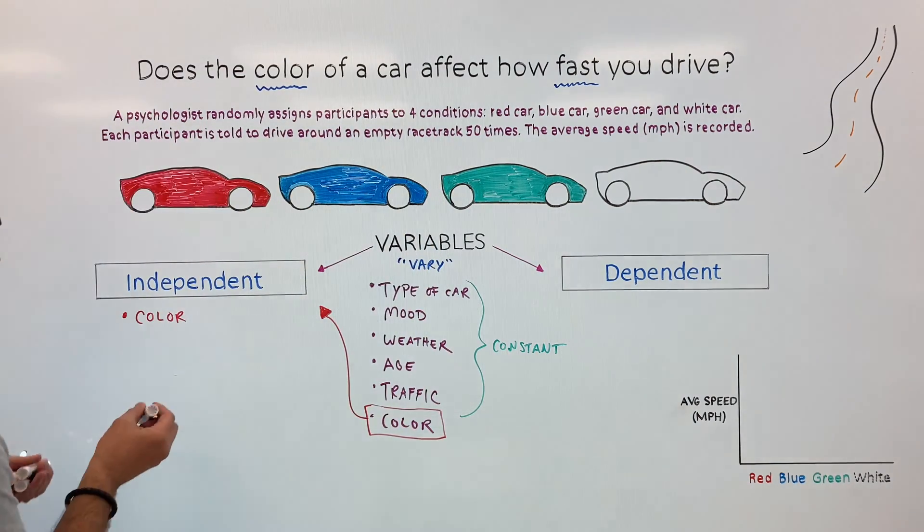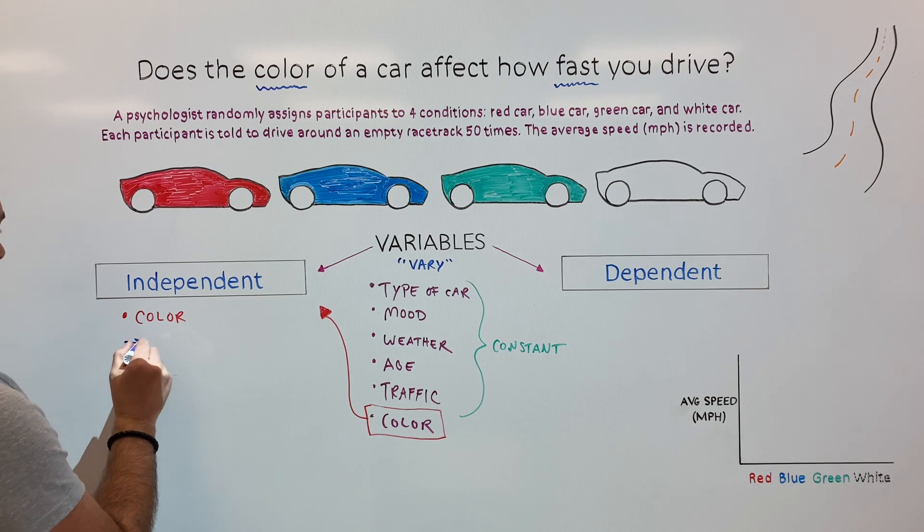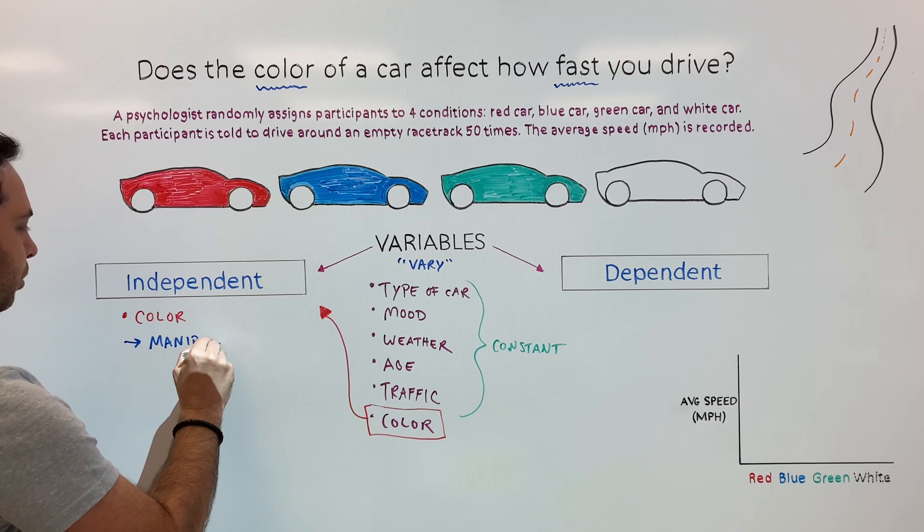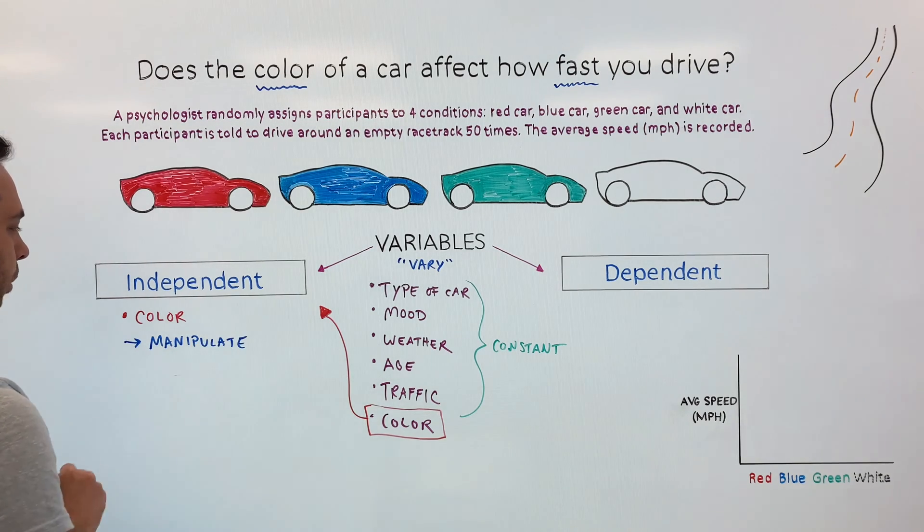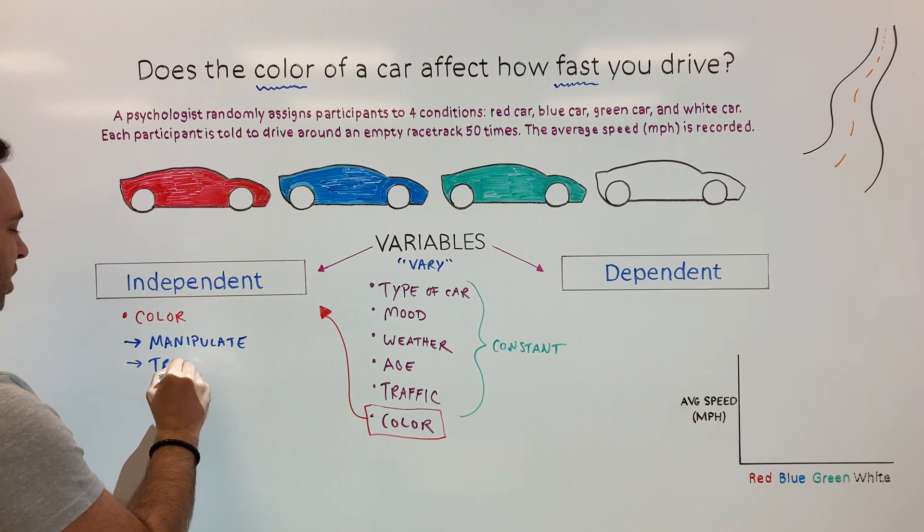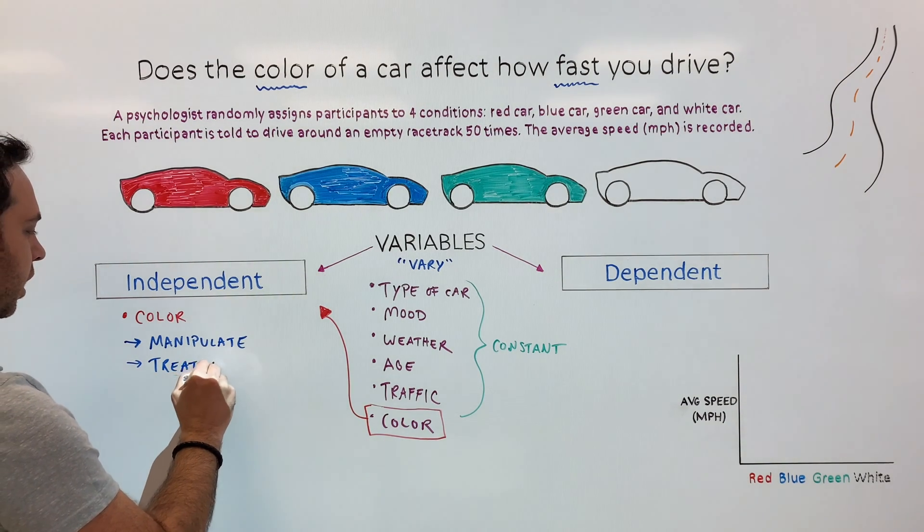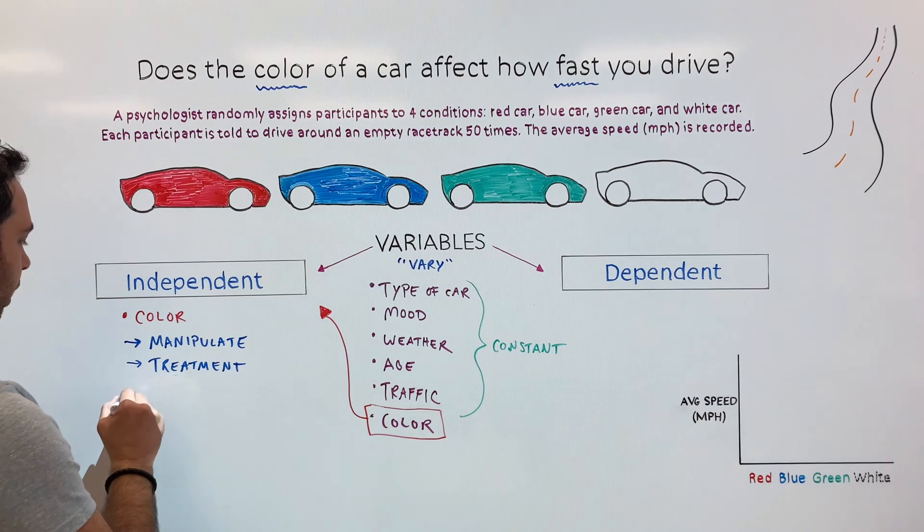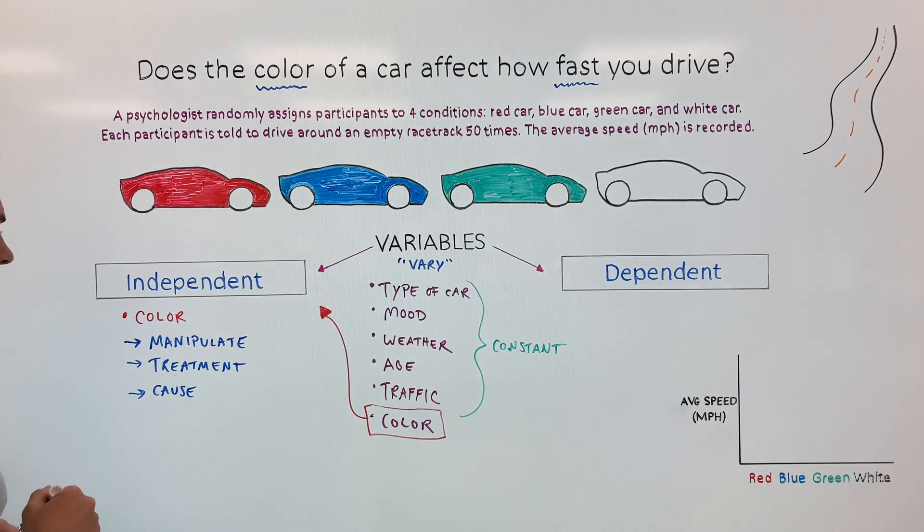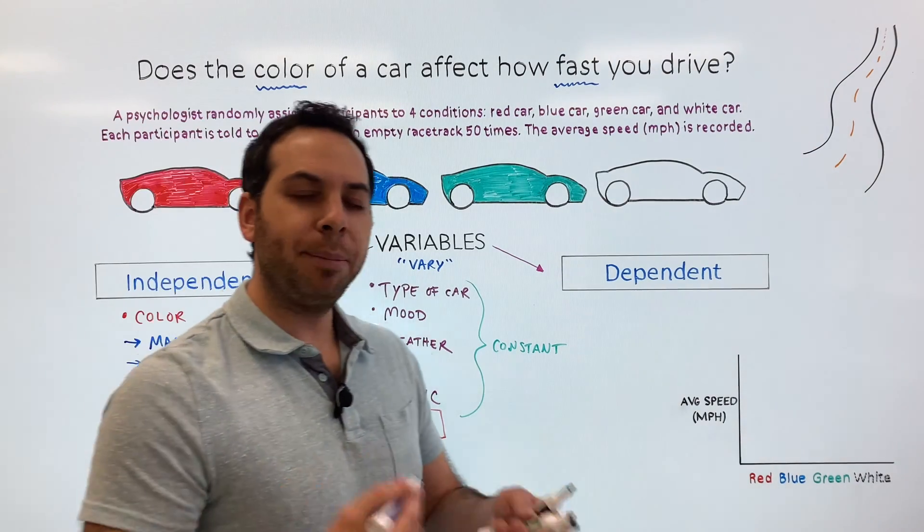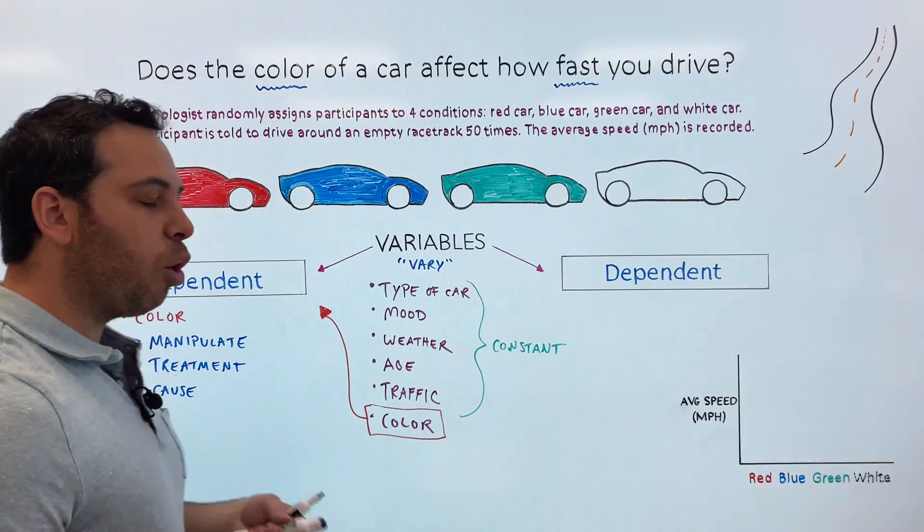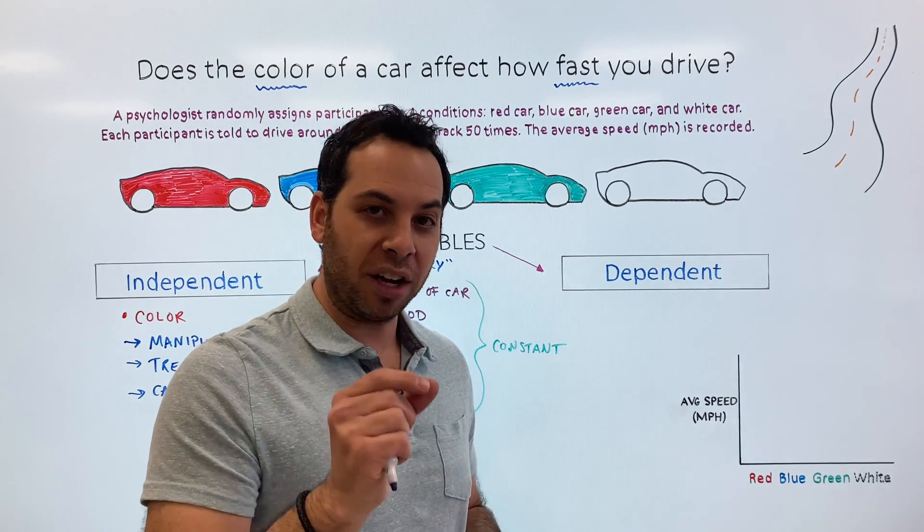We often describe our independent variable a few ways. You might hear the expression that it is what we manipulate. There's all these different expressions for our independent variable: what you manipulate, or possibly the treatment. And we usually use the word treatment when we're discussing medication or pills in a study. Or you could possibly say the cause. These are all different ways to explain what the independent variable is. It is the one that you manipulate. It is the one that you change. It is the one that is the cause or treatment and everything else must remain unchanged.